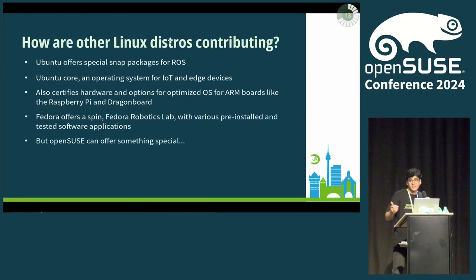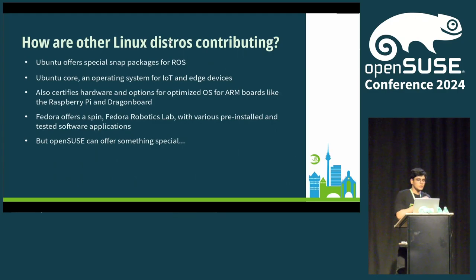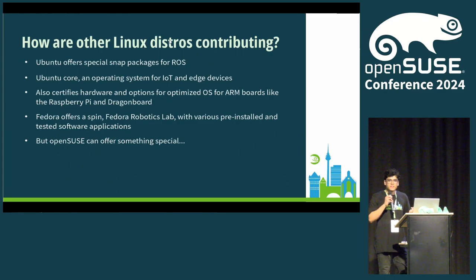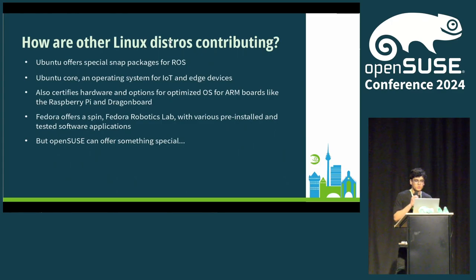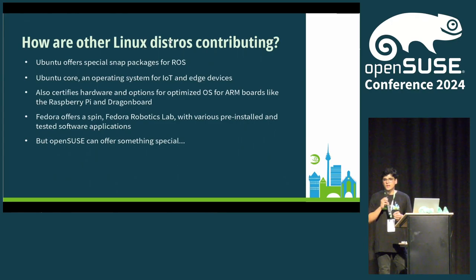How are other Linux distributions contributing? Ubuntu is really big in the field — they offer a lot of snap packages for ROS. There's Ubuntu Core, which is a special optimized operating system for IoT devices, and they certify a lot of hardware as well, like Raspberry Pis and DragonBoards. Fedora also offers a special flavor, which is the Fedora Robotics Lab. But OpenSUSE, I feel, can offer something special.